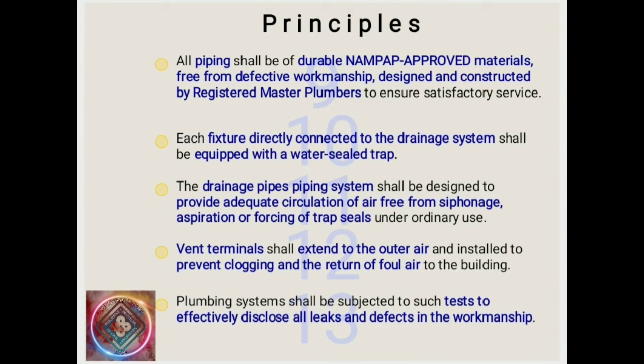Ninth: All piping shall be of durable, approved materials, free from defective workmanship, designed and constructed by registered master plumbers to ensure satisfactory service. Tenth: Each fixture directly connected to the drainage system shall be equipped with a water-sealed trap. Eleventh: The drainage piping system shall be designed to provide adequate circulation of air, free from siphonage, aspiration, or forcing of trap seals under ordinary use.